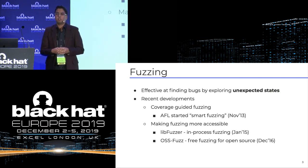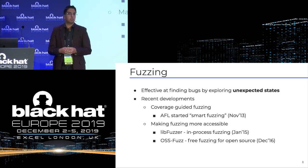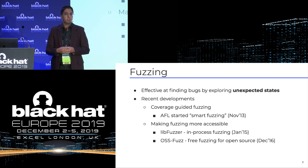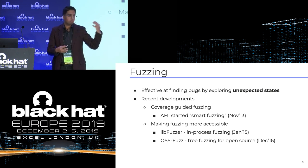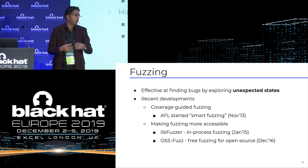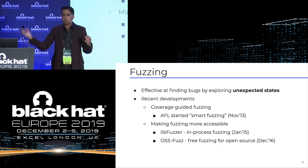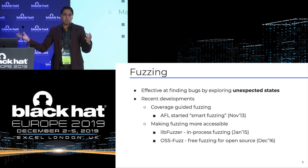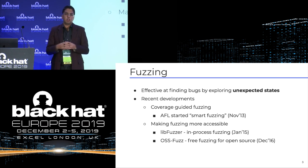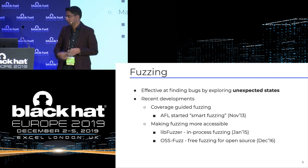Right now we have 250 open source projects integrated with the service. Think of your popular crypto library like OpenSSL, or XML library like LibXML2, or font library FreeType, or image parsing libraries like ImageMagick and LibPNG. All of those are integrated with this service.